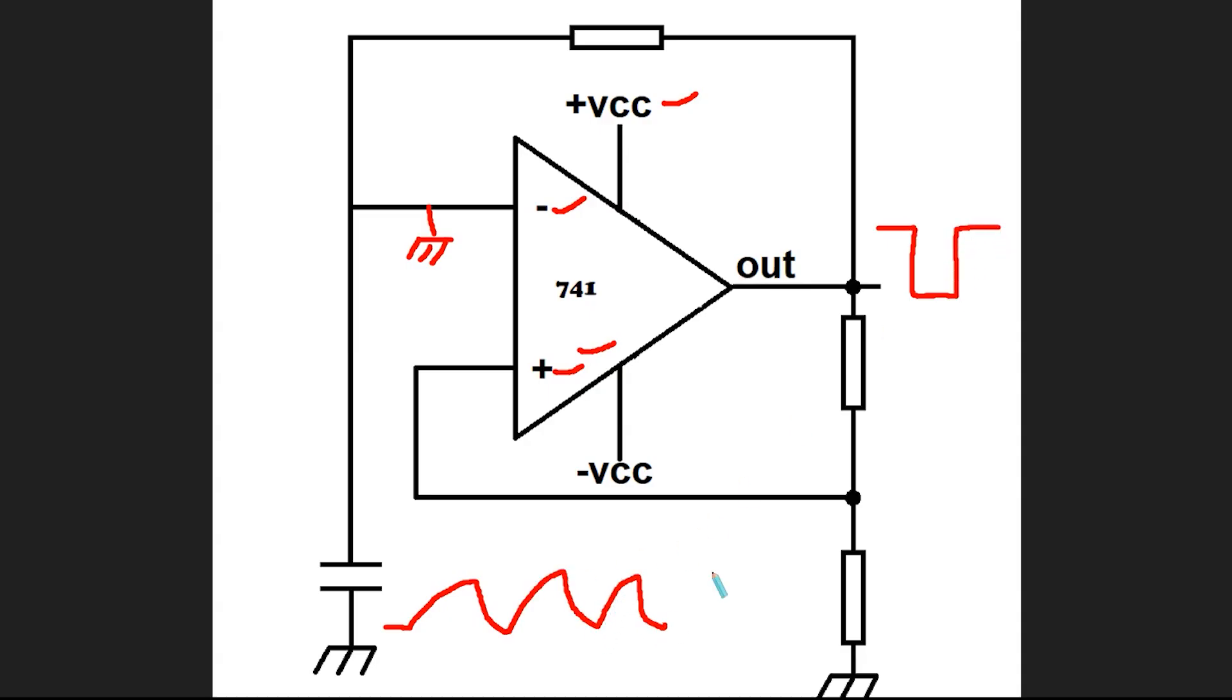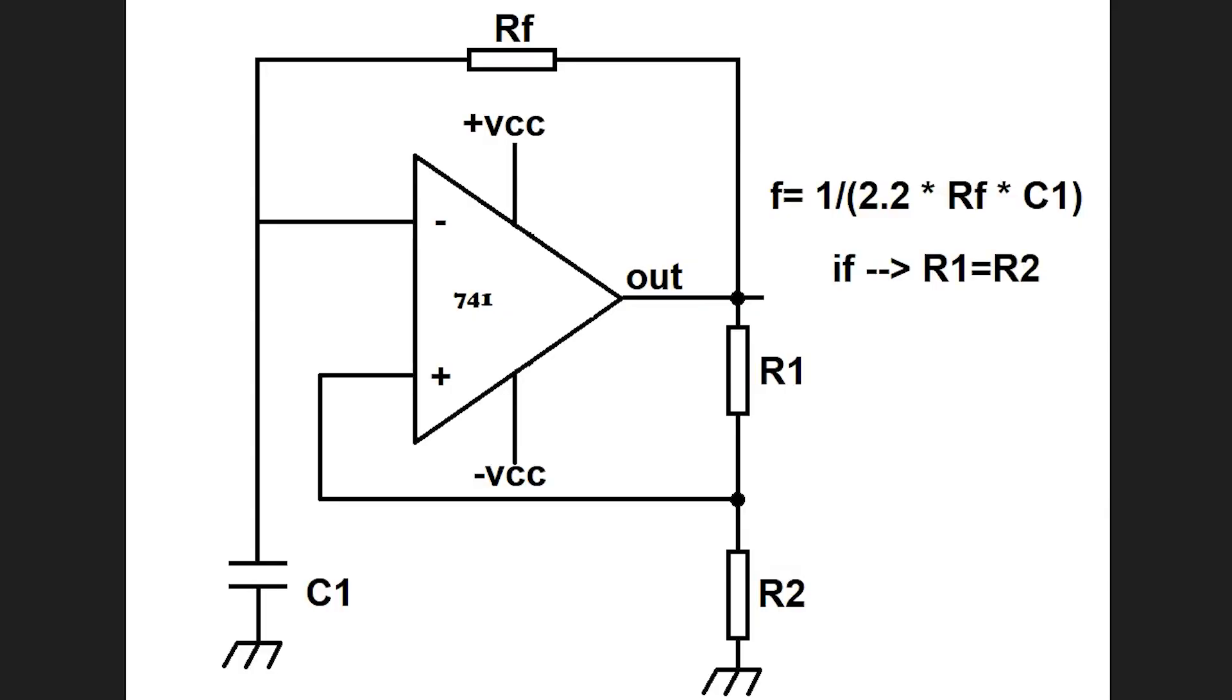As a result, we get a continuous square wave signal at the output. So, what's the frequency of this oscillator? Assuming the two resistors used in the voltage divider are equal, the frequency can be calculated using this mathematical formula.